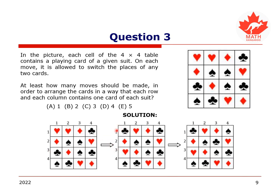Then, for the second move, we exchange the card in the first row and the fourth column with the card in the second row and the third column, as such.